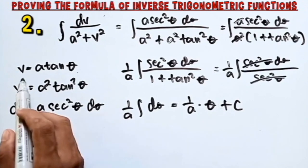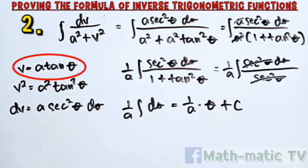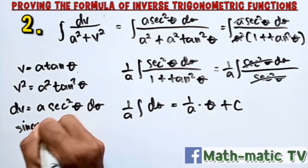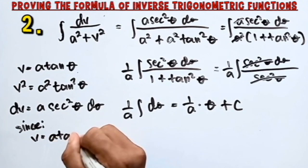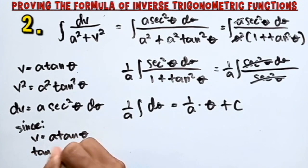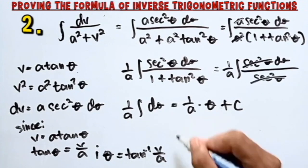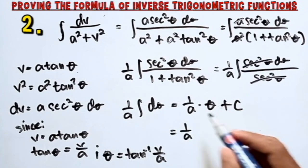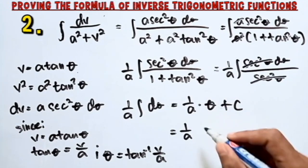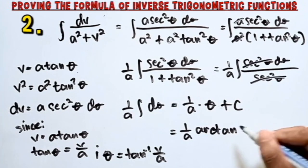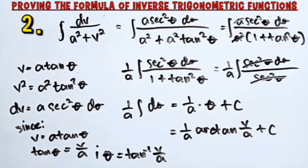Now let's go back to the first equation to get the value of θ. Since v = a tanθ, dividing both sides by a gives tanθ = v/a, and therefore θ = arctan(v/a). To get the final answer, we substitute the value of θ, giving (1/a) times arctan(v/a) + c. This is our final answer.